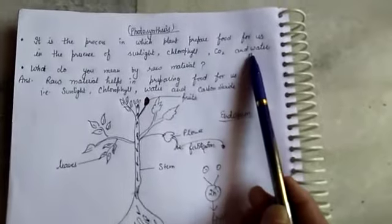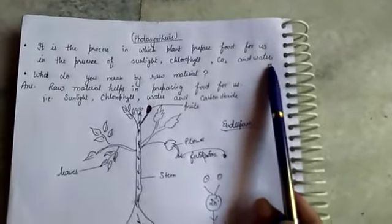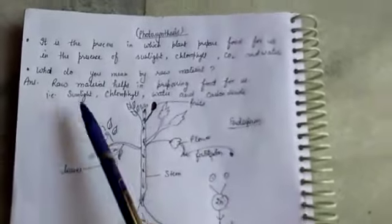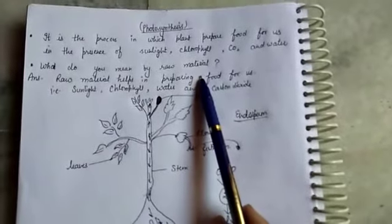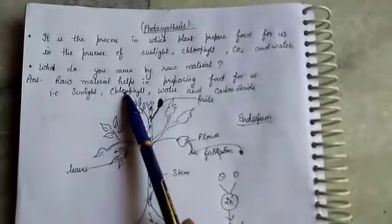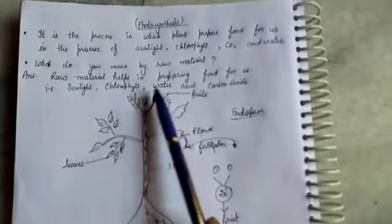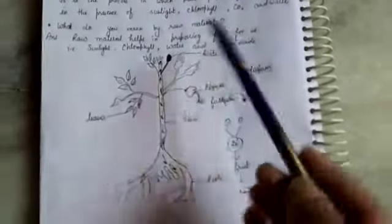Carbon dioxide we obtain from the atmosphere, and water vapors from the roots and water and atmosphere also. We need some raw materials to prepare the food. That is sunlight, chlorophyll, water, and carbon dioxide.